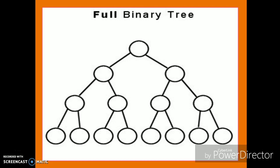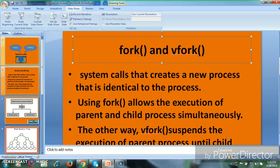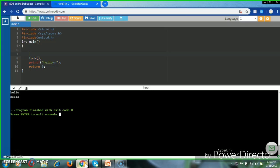The child process creation can be represented as two to the power of three, giving us eight total executions. So let us see the execution of a simple fork system call.